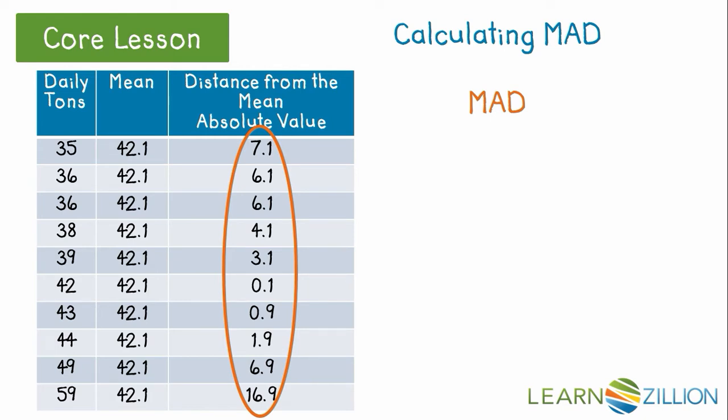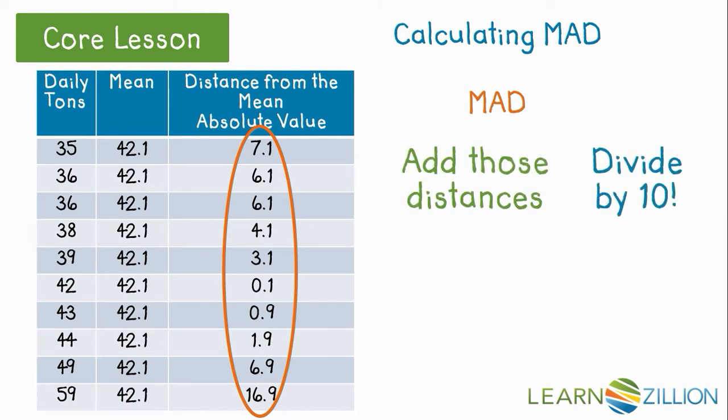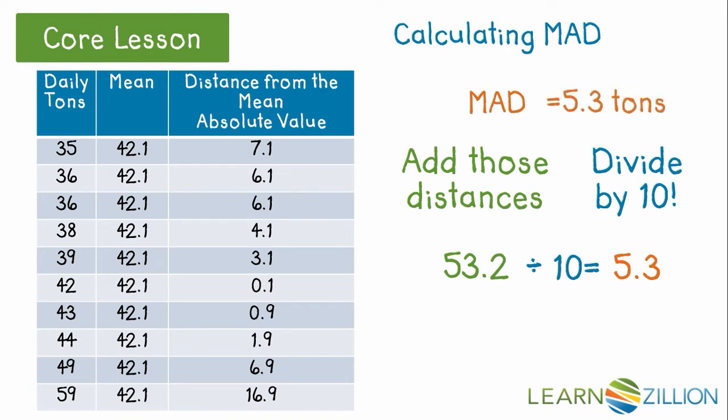To find the mean absolute deviation, add the distances together and divide by 10. For this data, the sum is 53.2 divided by 10 equals 5.3, so my MAD is 5.3 tons.